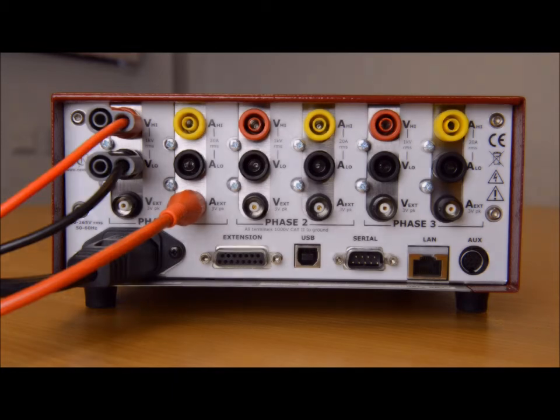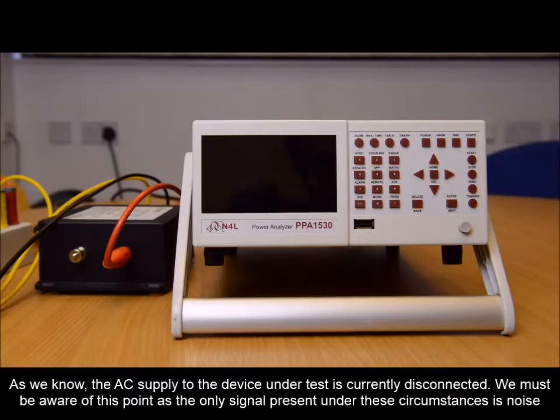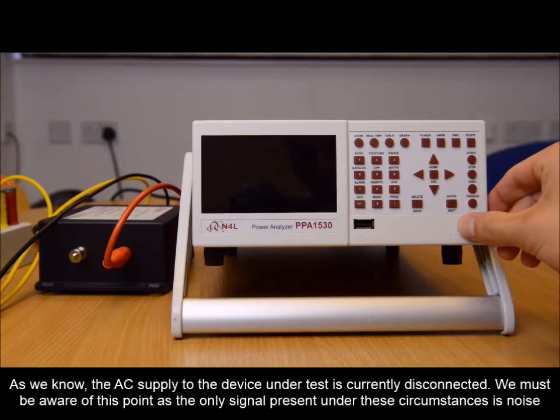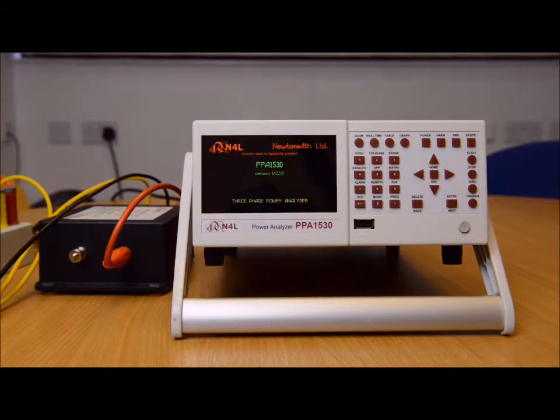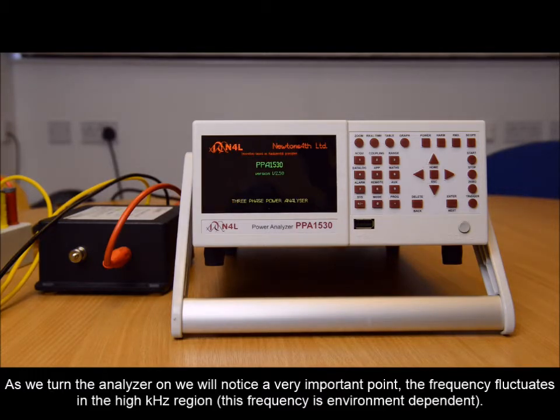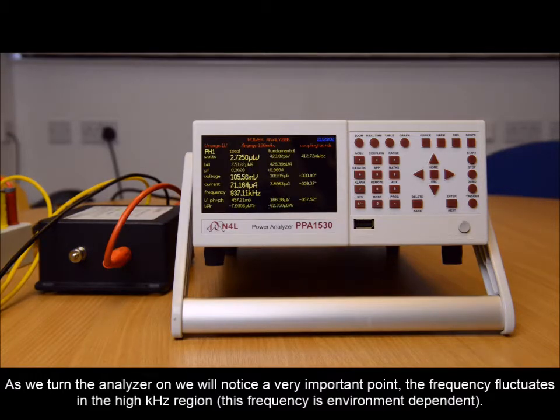Notice we are not using the internal current shunt. As we know, the AC supply to the device under test is currently disconnected. We must be aware of this point, as the only signal present under these circumstances is noise. As we turn the analyzer on, we will notice a very important point: the frequency fluctuates in the high kilohertz region.